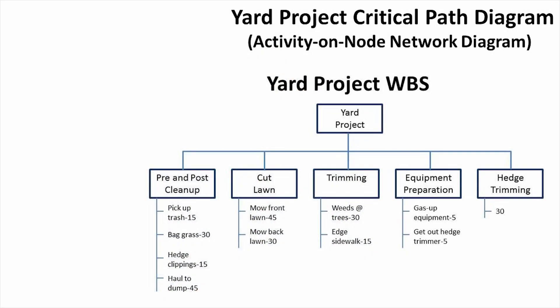That's what our work breakdown structure looks like for our yard project. Now, to the network diagram. The first step is to decide what can be done first, and sometimes it's possible to start several different tasks at the same time — if that's the case, you simply draw them side by side and start working from there. Looking at our work breakdown structure, we see we're going to have to do some pre-cleanup before the actual mowing of the lawn, and we have to do some equipment preparation, so these two tasks will be part of the first things we do.